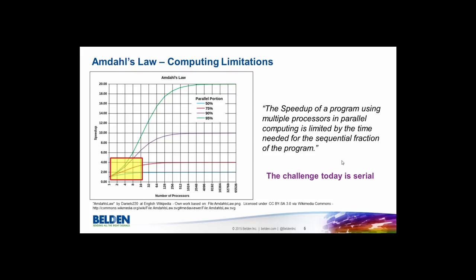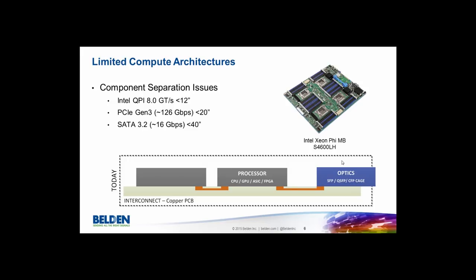If we go back to the world of compute and look at how to make things run faster in a parallel paradigm, we can talk about Amdahl's law. Amdahl's law tells us that we can throw more parallel resources at a problem, but we're fundamentally always going to be limited by the serial or sequential portion of the algorithm. Looking at the graph, we're living in that little red and yellow box — throwing more processors at the problem doesn't help much because of sequential and serial IO limitations. It's a serial problem, not a parallel problem, that needs to be fixed.